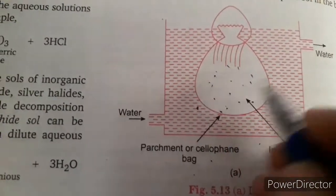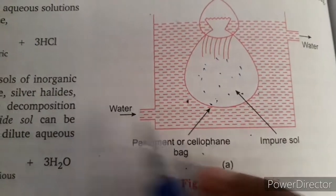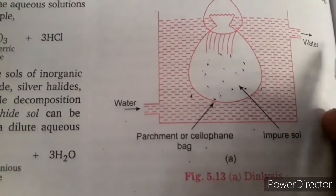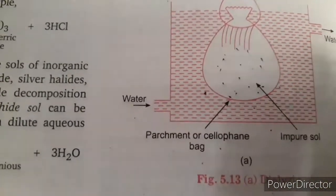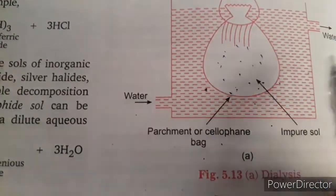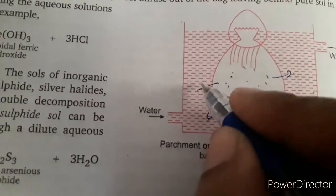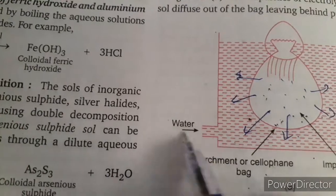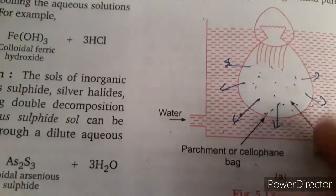Suppose you have crystalloid particles in the bag. You keep this bag in a container that is filled with water. The container has two openings — one inlet and one outlet — so water flows continuously. The crystalloid particles pass out through the membrane. You keep the water flowing, and the colloidal solution remains inside the bag while impurities move into the water outside.